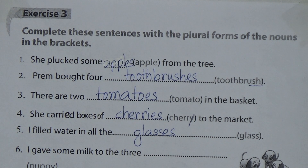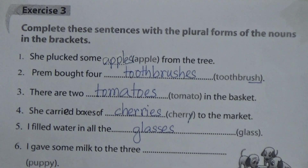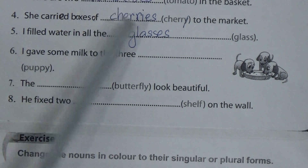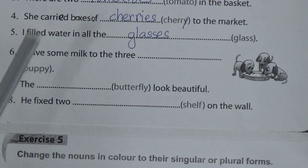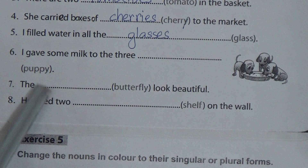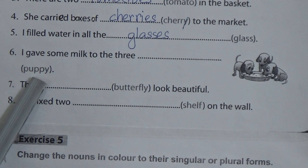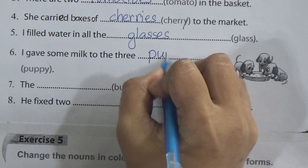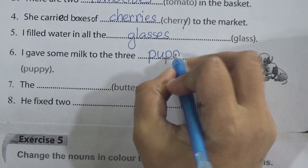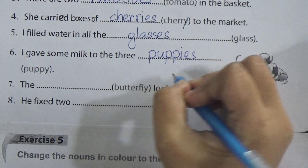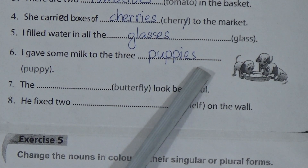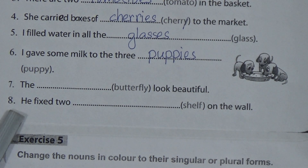Number six: I gave some milk to the three _puppy_. There is a picture of three puppies. Just like cherry in number four, we drop Y and add IES to make it plural. So it will be puppies — P-U-P-P-I-E-S. I gave some milk to the three puppies.